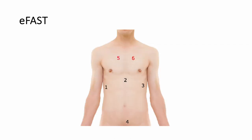FAST scan is a protocol, and each protocol is comprised of multiple views. In the classic FAST scan we have four views: the first is the right hepatorenal or right upper quadrant, the second is the subxiphoid area, the third is the left upper quadrant or splenorenal space, and the fourth is the pelvic assessment or suprapubic view. In the extended FAST scan we add two more views to assess the right and left sides for hemothorax, and in the hepatorenal and splenorenal spaces you can also assess for free fluid in the thorax to detect hemothorax in trauma and pleural effusion in non-traumatic patients.